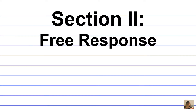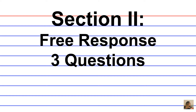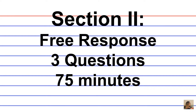Remember that Section 2 consists of free response questions. There are three questions that should be formatted as short essay answers, and you have 75 minutes to complete them, so allocate your time properly. The free response section is 50% of your exam score. You're required to define, explain, and apply geographic concepts, and also interpret geographic data.